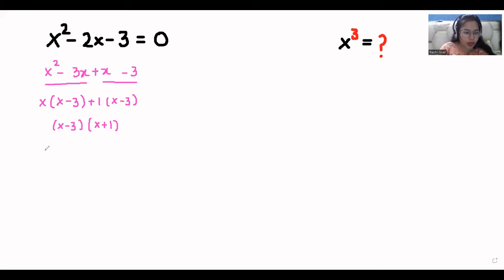So one by one, when x minus 3 equals 0, the value of x is 3.